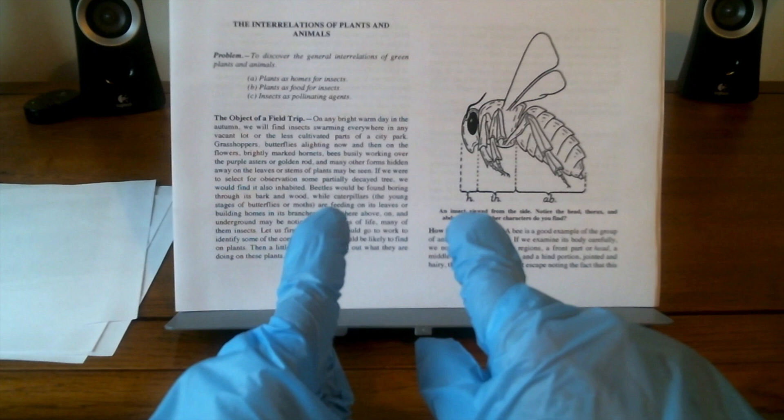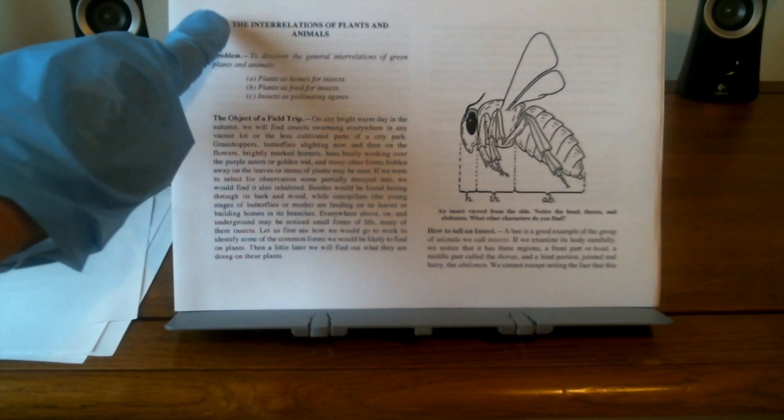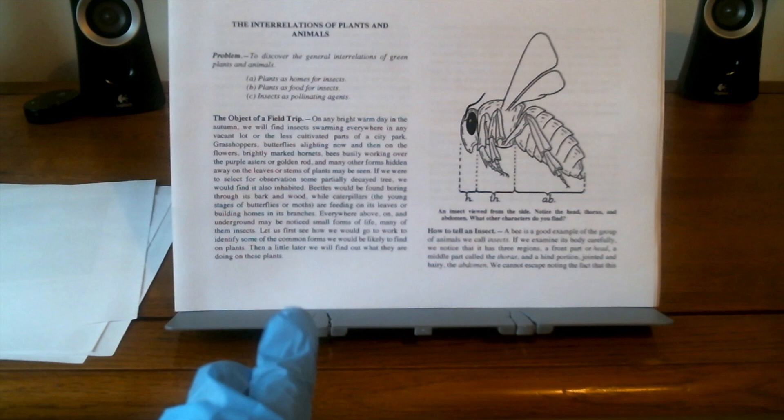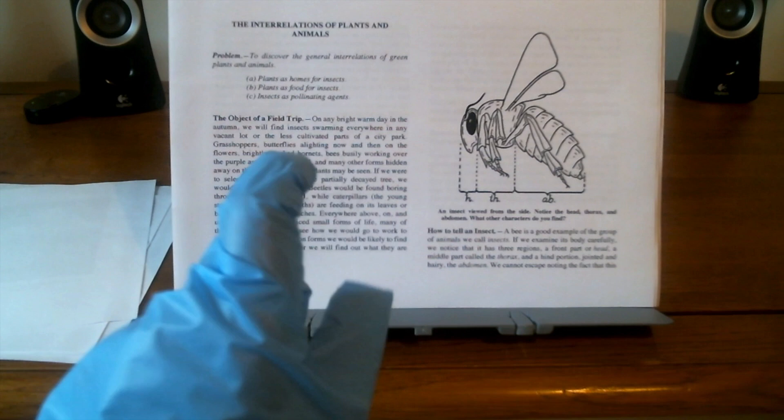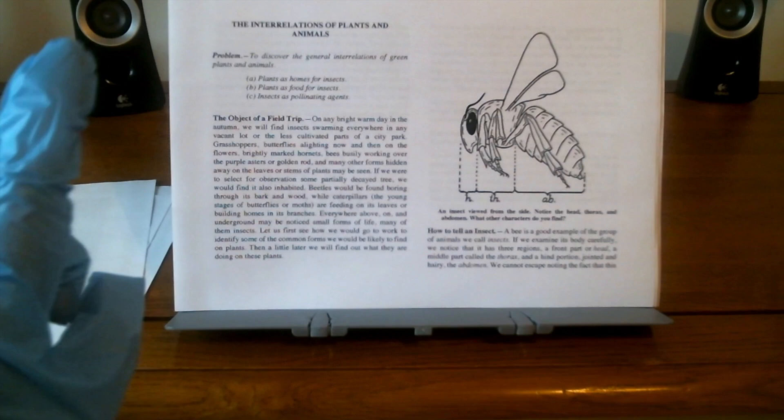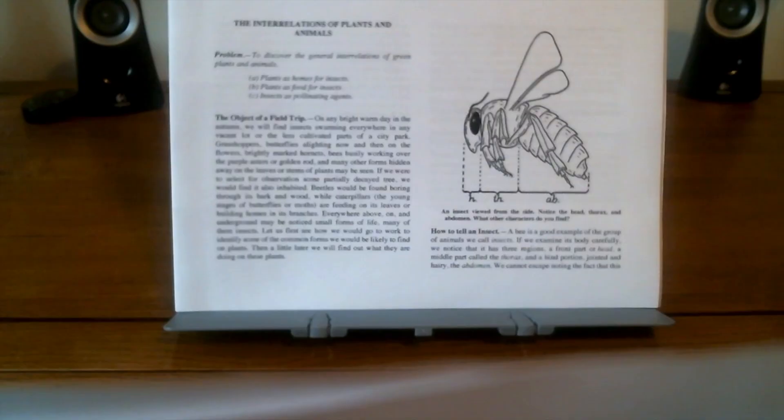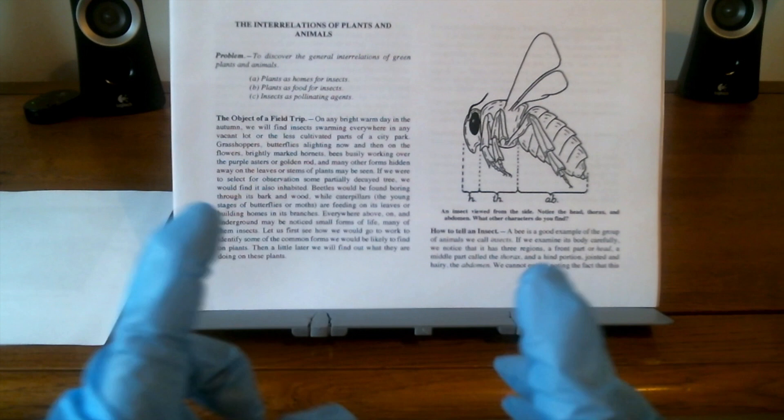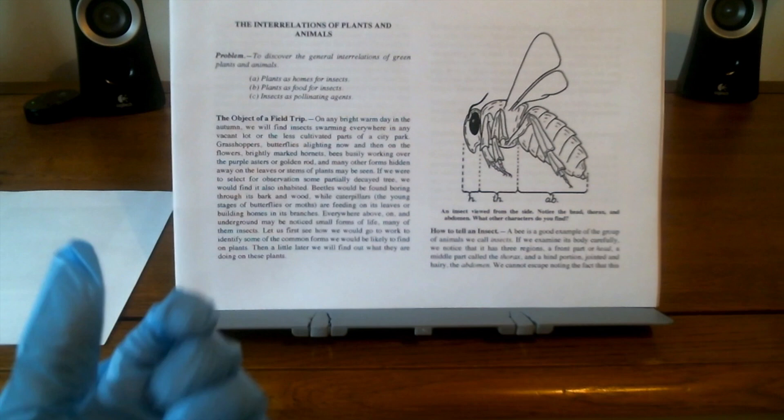Here we have the second part of today's biology lesson. The interrelation of plants and animals. Our objectives for today: to discover the general interrelation of green plants and animals. A, plants as home for insects. B, plants as food for insects. And C, insects as pollinating agents. Is everyone with me? Okay, moving on.